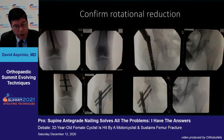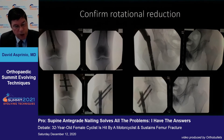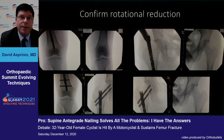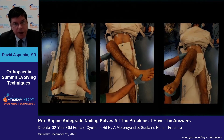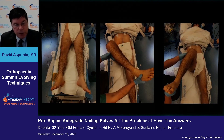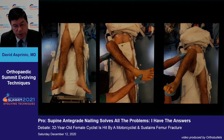These intraoperative fluoroscopic images confirm appropriate rotational reduction of the fracture in question. Clinical evaluation confirms appropriate restoration of resting leg length and rotation, as well as external and internal rotation similar to the contralateral extremity at 90 degrees hip and knee flexion.